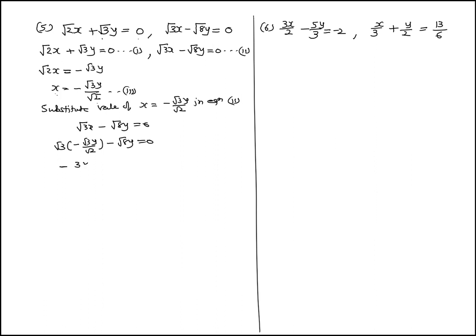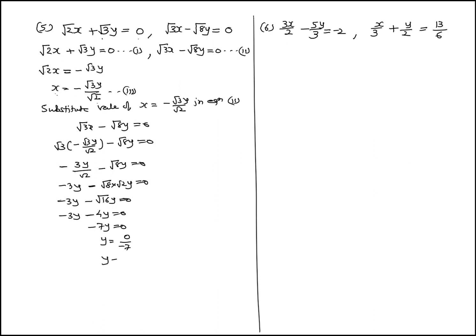Simplifying: root 3 times root 3 gives 3, so we get minus 3y upon root 2 minus root 8 y equal to 0. Taking LCM, minus 3y minus root 16 y equal to 0. Since square root of 16 equals 4, we get minus 3y minus 4y equal to 0, so minus 7y equal to 0.